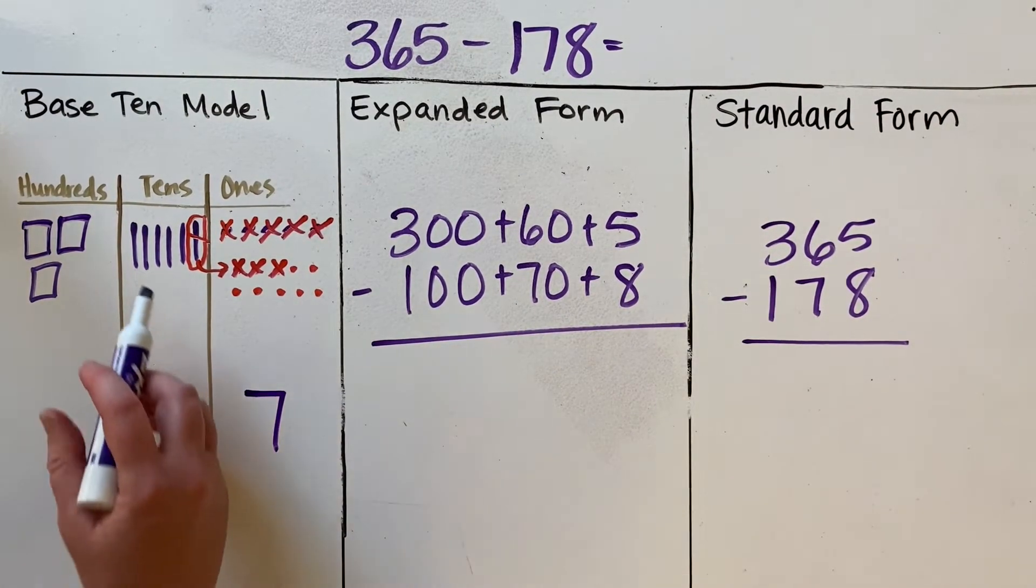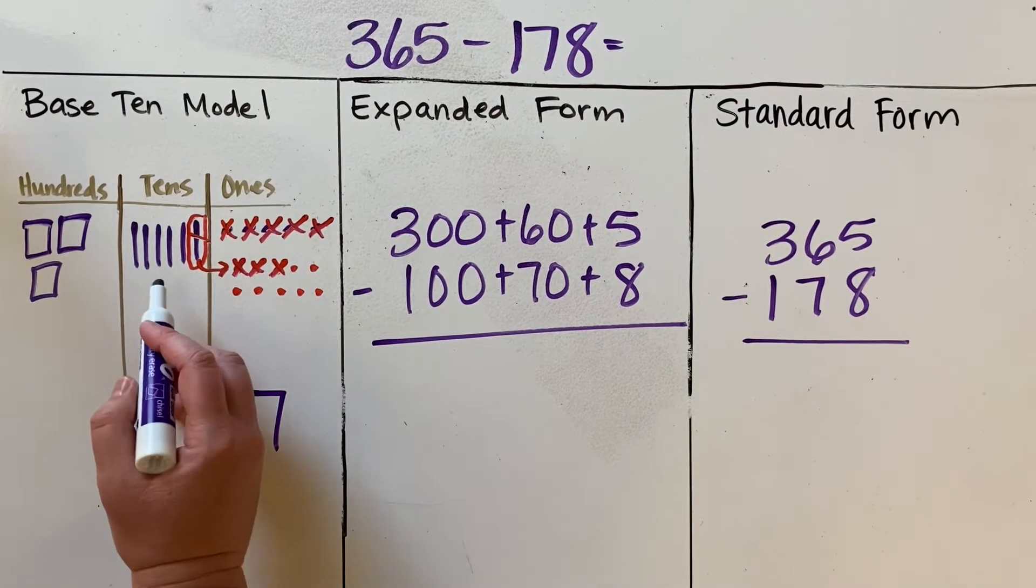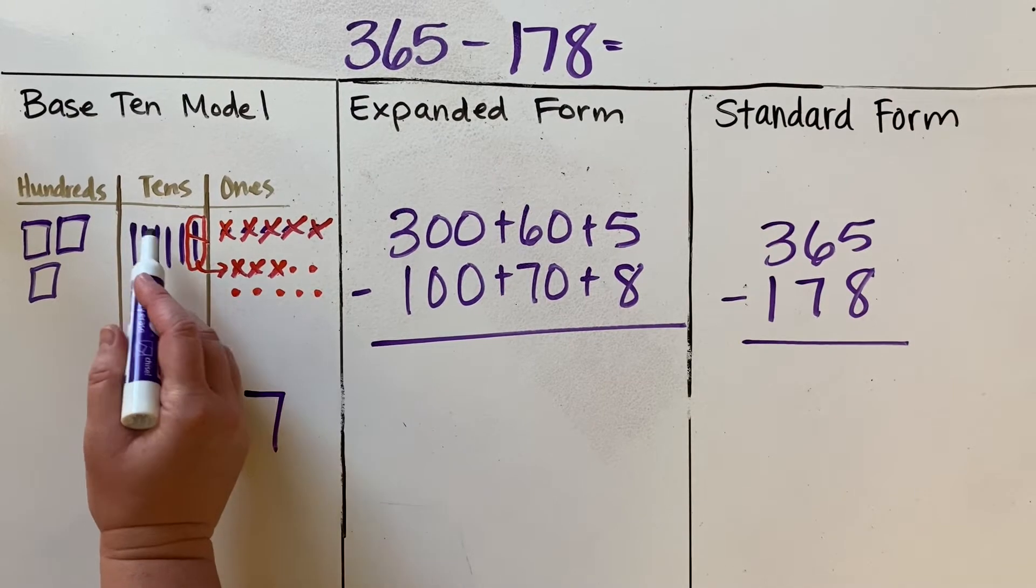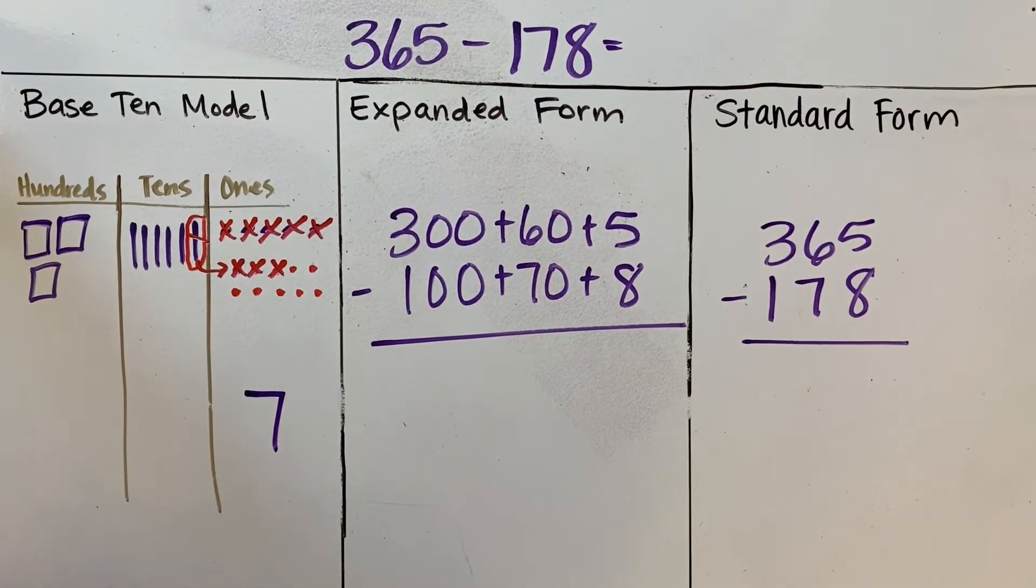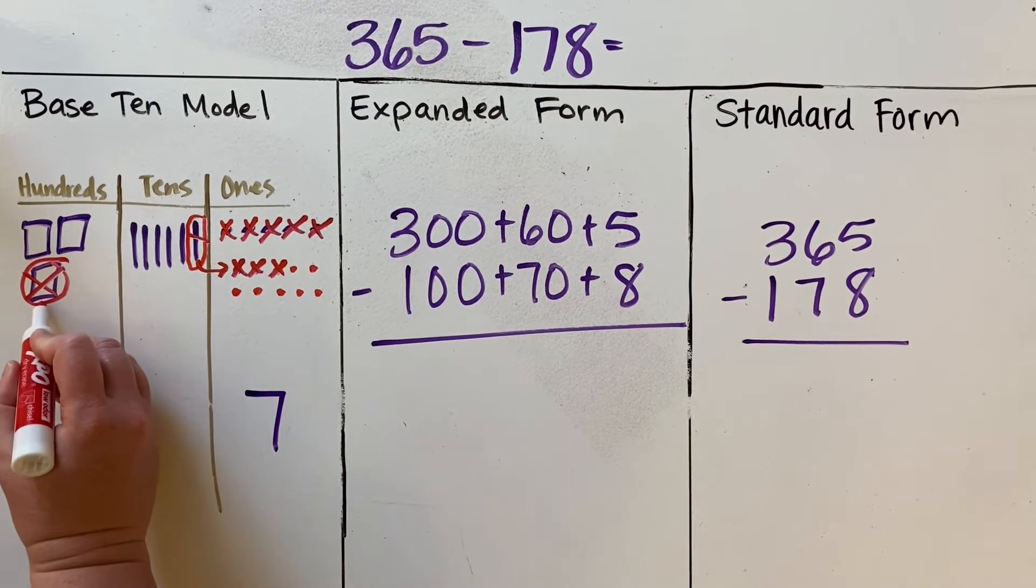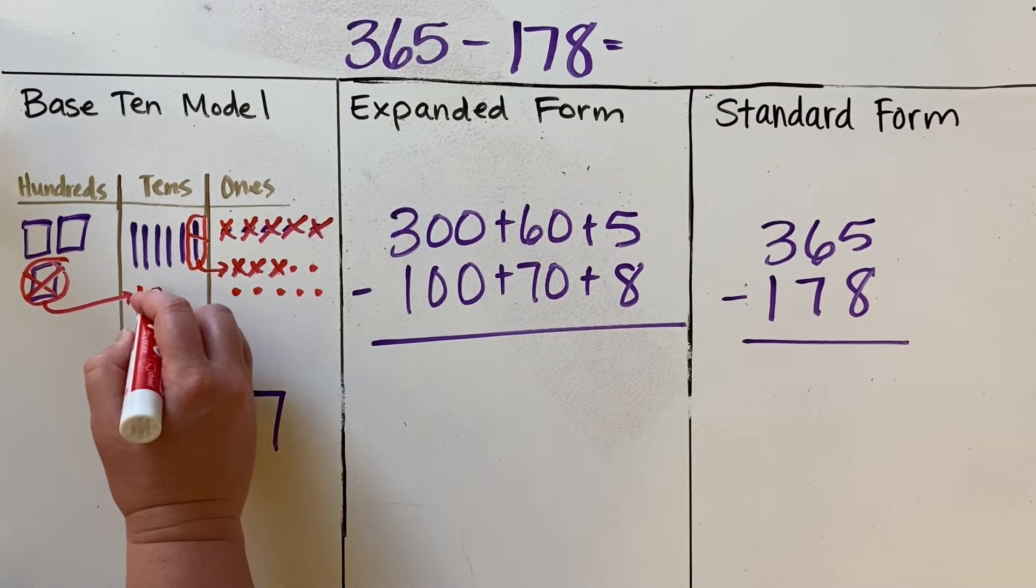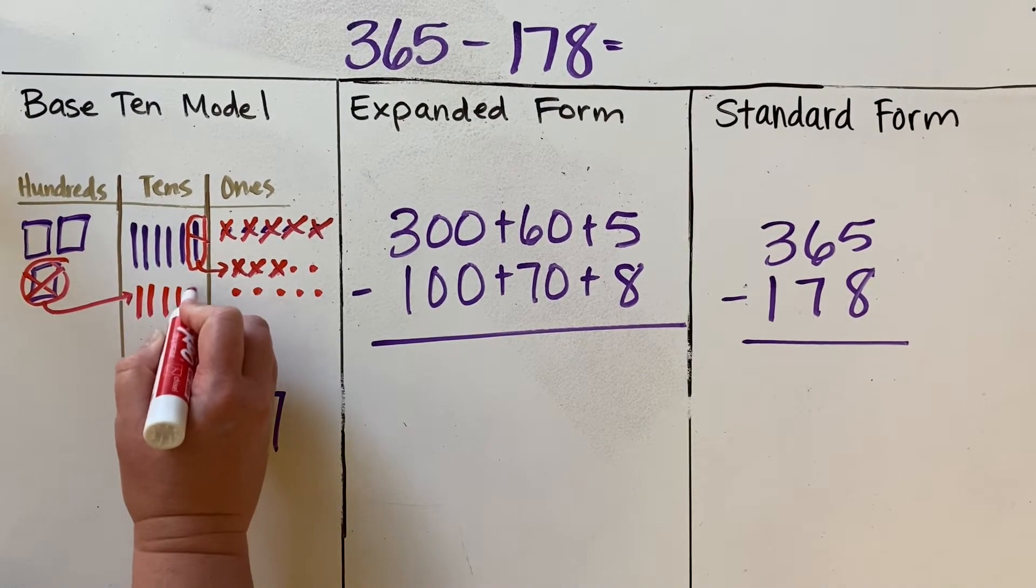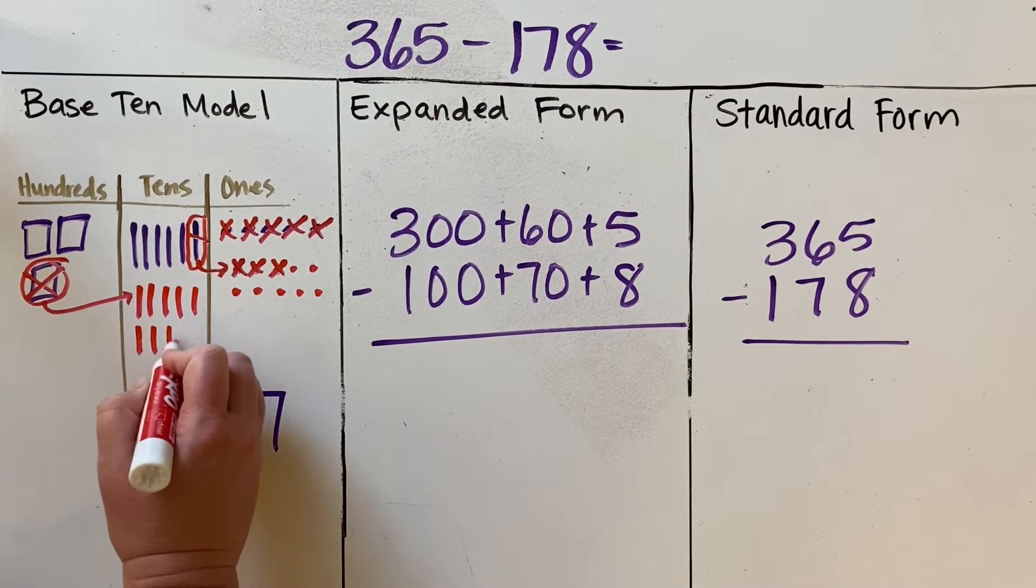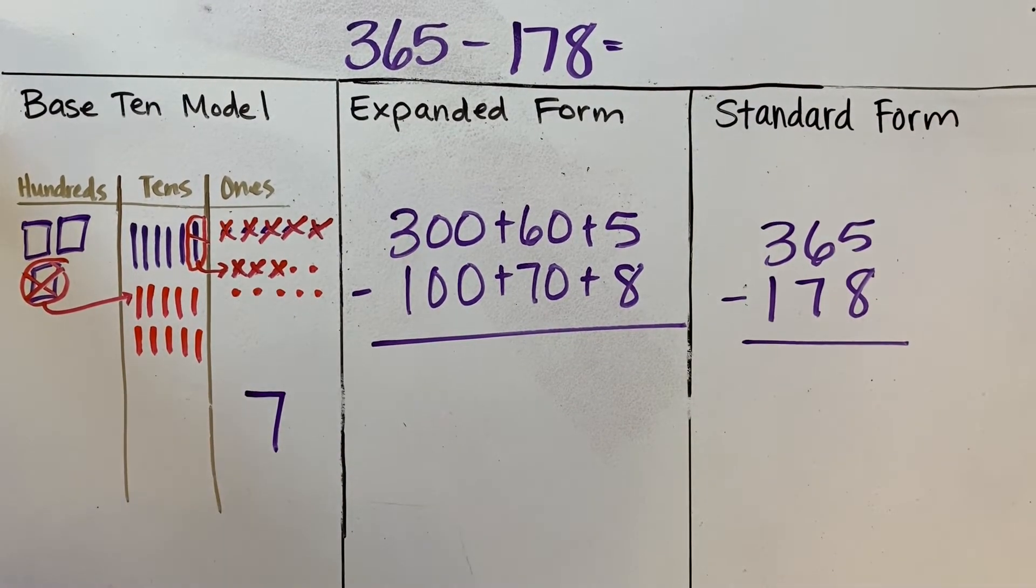In the tens place, I now only have five tens, and I'm going to subtract seven tens. And again, that's not enough. I can't take away seven tens if there are only five. So I need to decompose 100 and regroup it over here so that now there are 10 more tens.